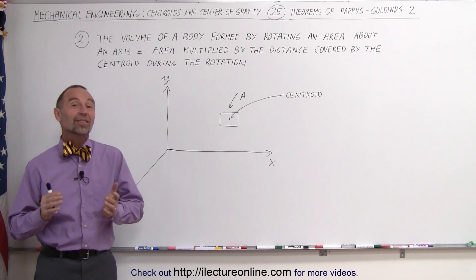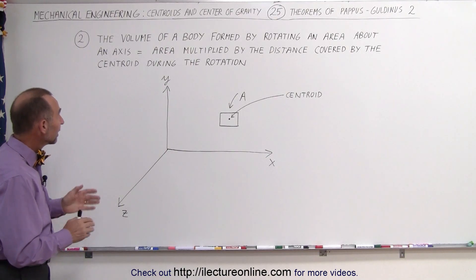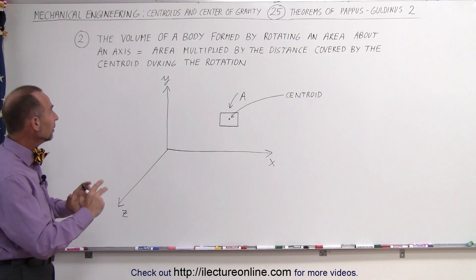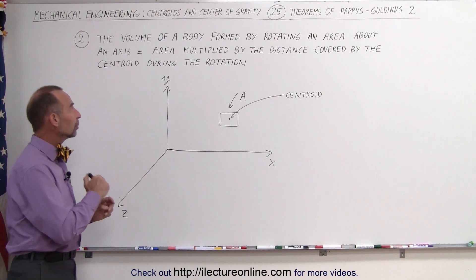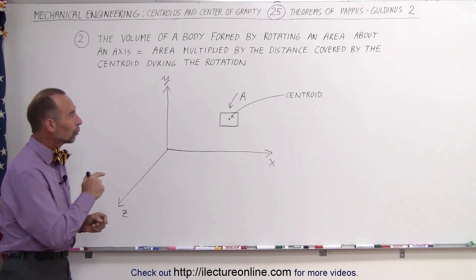Welcome to ElectronLine. Here's the second theorem of Pappas Guldinas. In this case it says that the volume of a body formed by rotating an area about an axis is equal to the area multiplied by the distance covered by the centroid during the rotation.